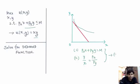These two together give you x equals m by 2px, and y equals m by 2py. So basically the individual will spend half of his income on x and will spend the other half on y. Thank you.